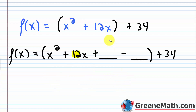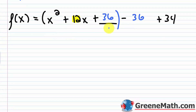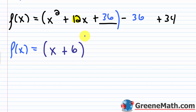Now I have a perfect square trinomial. I close the parentheses around x² + 12x + 36, and since there's nothing multiplying outside the parentheses, I can just remove the −36 from inside. So f(x) = (x² + 12x + 36) − 36 + 34. This factors into (x + 6)² and then −36 + 34 gives −2.